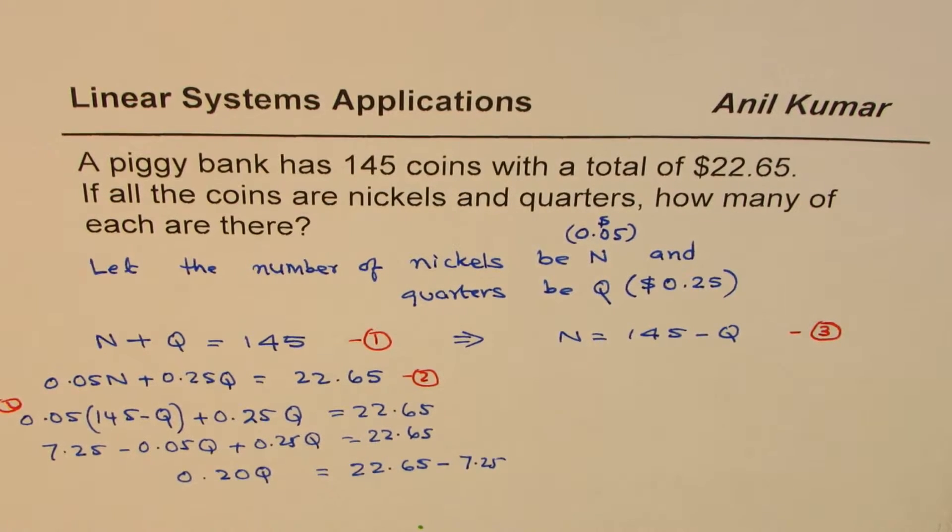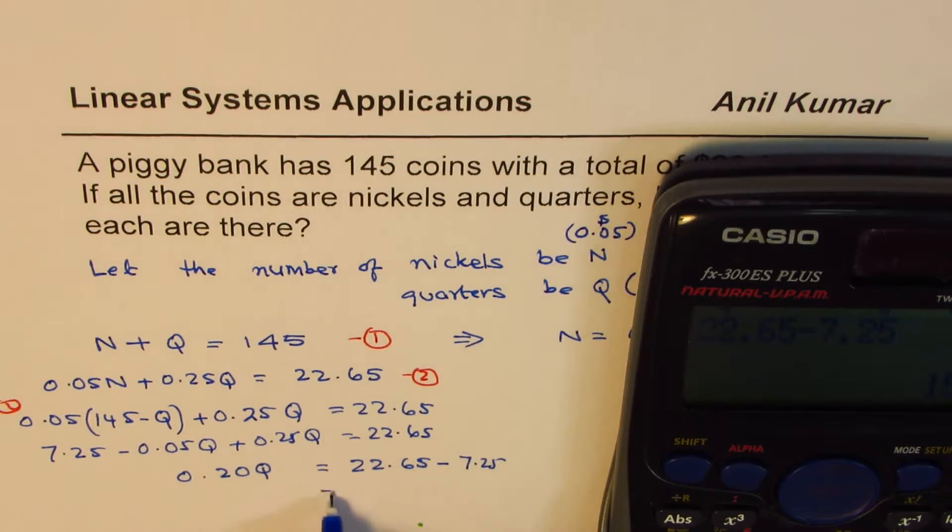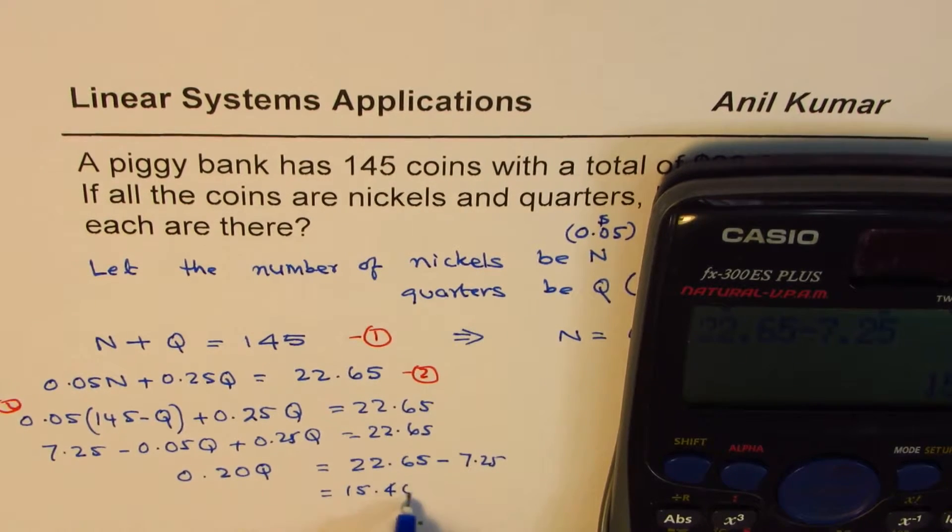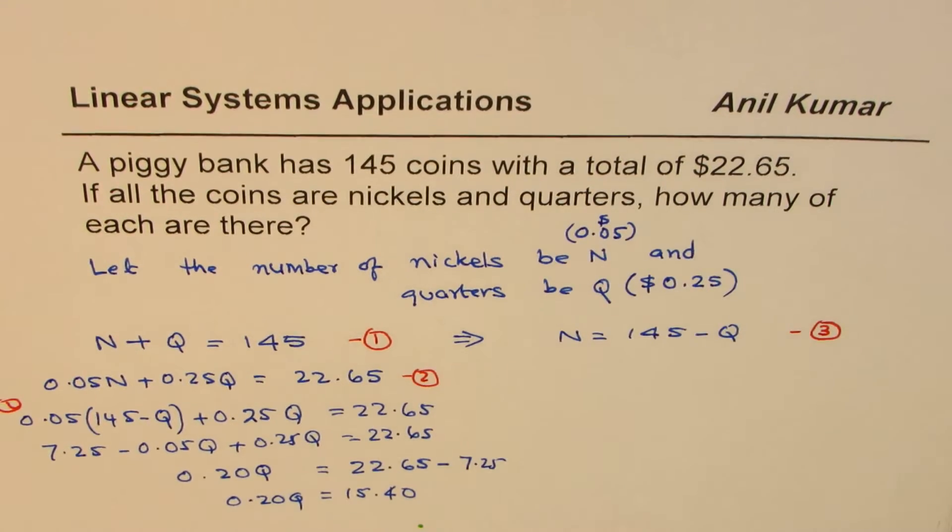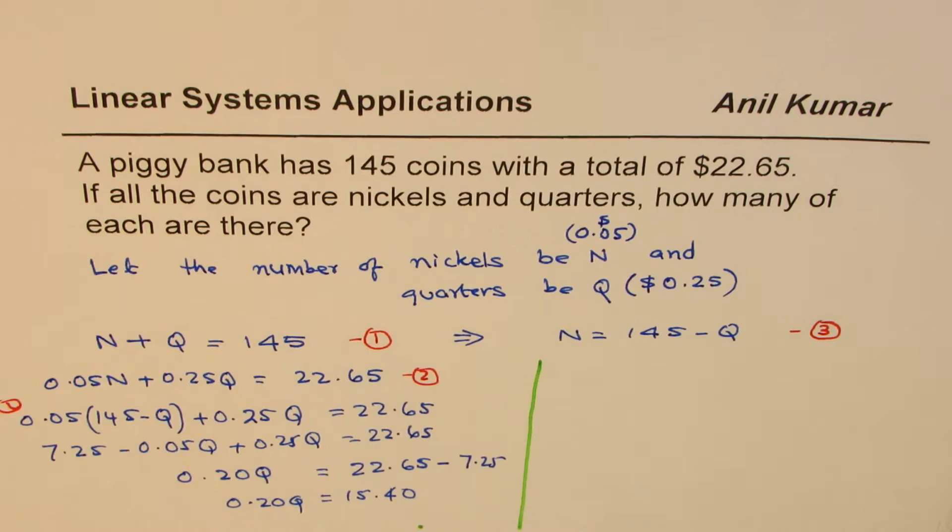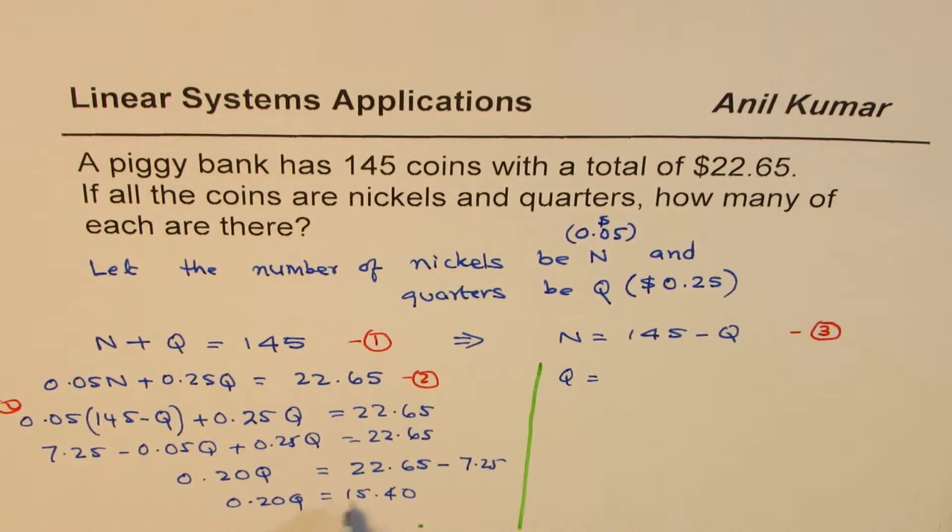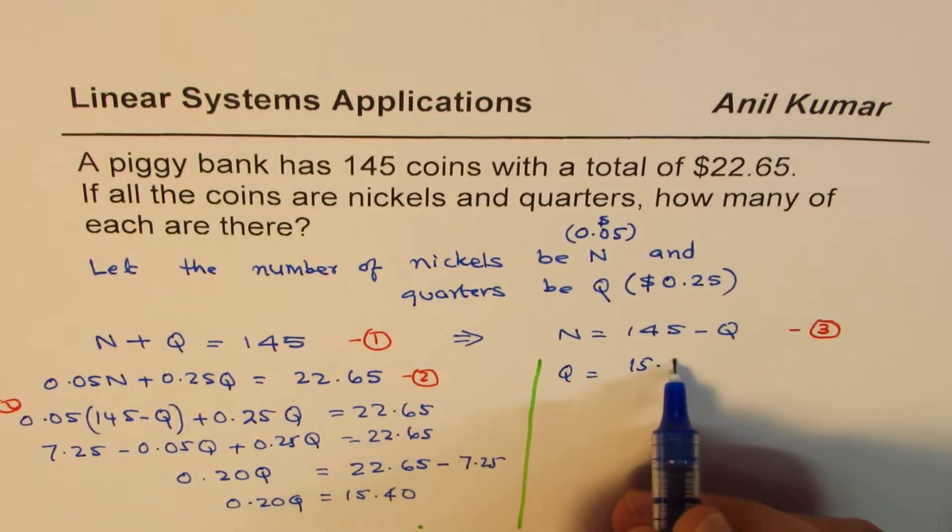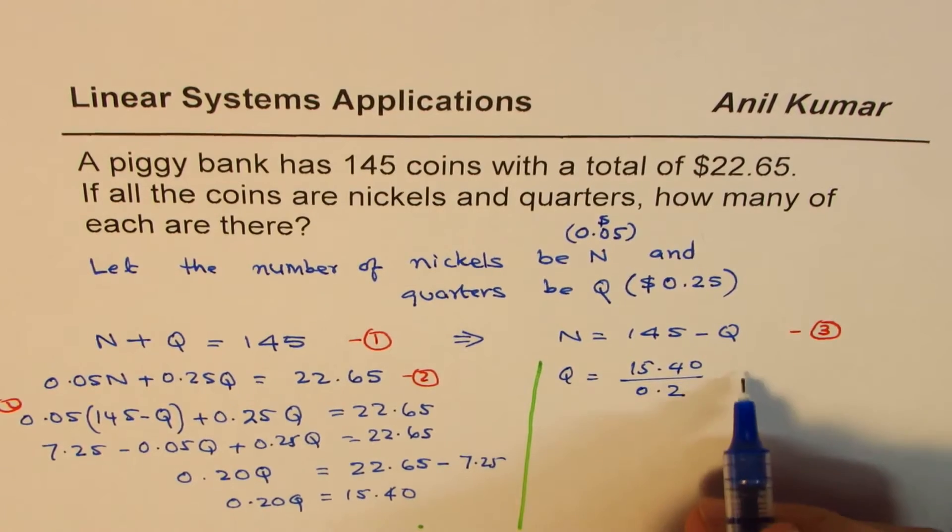Now, let's find what this is. So we have 22.65 take away 7.25. That gives us 15.40. So we have 15.40 is 0.20Q. So from here, we can actually find the number of quarters. So let me rewrite this. So what is number of quarters equals to? Number of quarters will be 15.40 divided by 0.2.